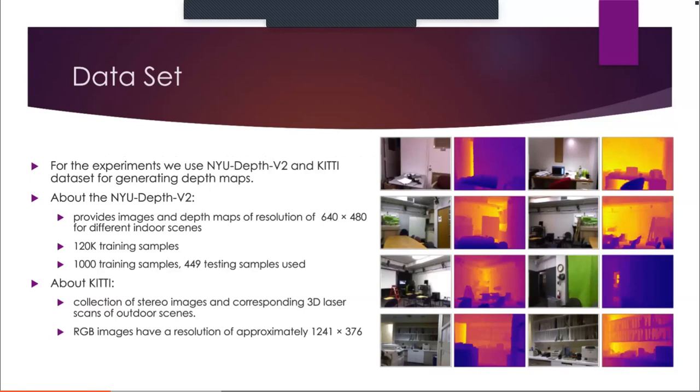KITTI is a collection of stereo images and corresponding 3D laser scans of outdoor scenes. RGB images have a resolution of approximately 1241 by 376 fixed resolution.